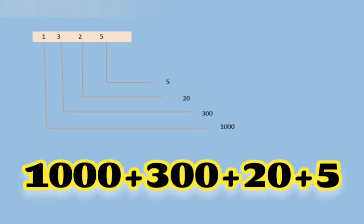Let's see again. 1 is on the 1000's place, 3 is on the 100's place, 2 is on the 10's place, and 5 is on the 1's place. 1 is on which place? Yes. And 3, 2, 5.